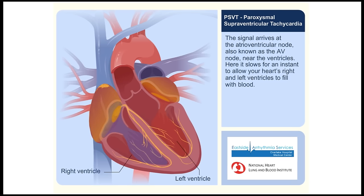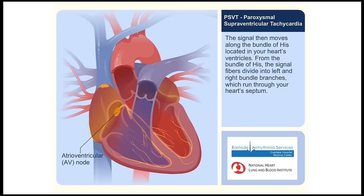The signal arrives at the atrioventricular node, also known as the AV node, near the ventricles. Here it slows for an instant to allow your heart's right and left ventricles to fill with blood.